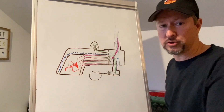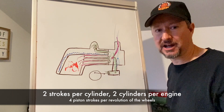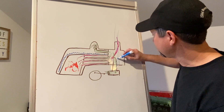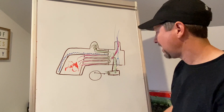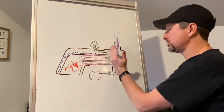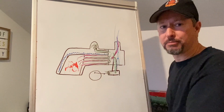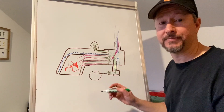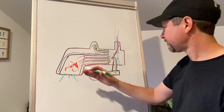With four piston strokes per revolution of the drivers, that's four exhausts per revolution — and that's where you get the chuff, chuff, chuff, chuff sound common on steam locomotives. As this exhaust steam blasts up through the exhaust nozzle and out the stack, it creates a vacuum — an area of negative pressure in the smokebox. That negative pressure draws the exhaust gases from the fire toward the smokebox and out the stack. Atmospheric pressure then seeks to balance that, creating negative pressure in the firebox, pushing air in through the dampers.